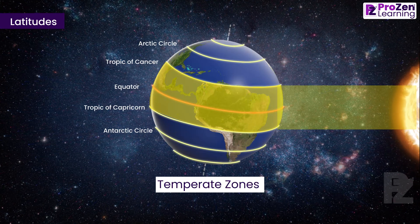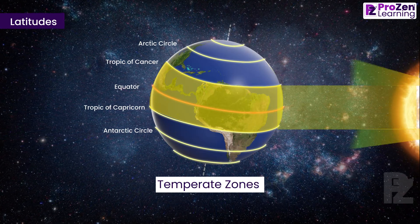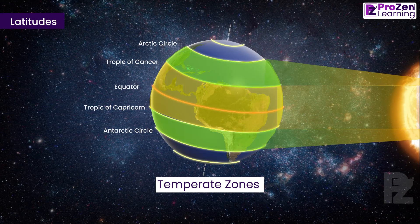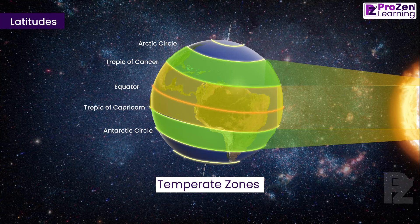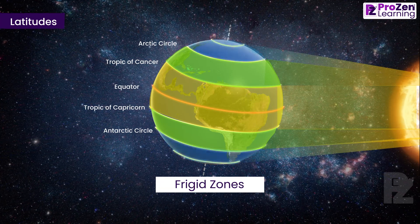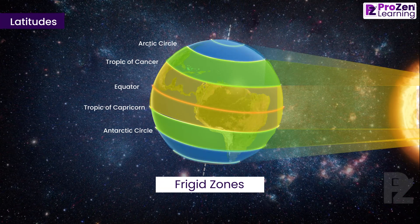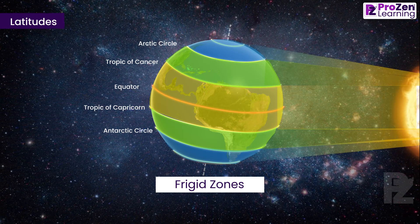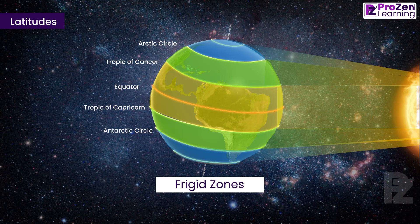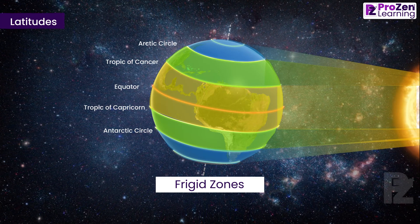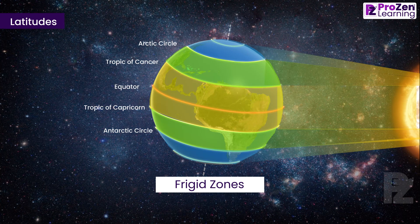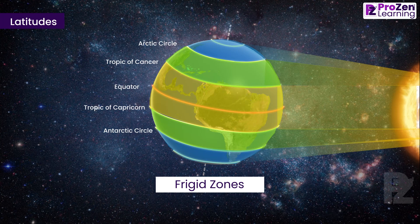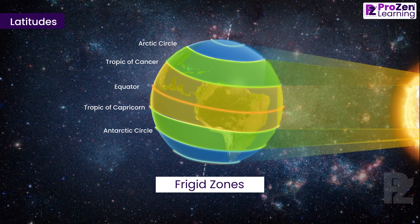Beyond the Tropic of Cancer and the Tropic of Capricorn, we have the Temperate Zones. The midday sun never shines directly overhead here, and the angle of the sun's rays decreases as we move towards the poles, so these zones experience moderate temperatures. The Frigid Zones lie between the Arctic Circle and the North Pole in the Northern Hemisphere, and between the Antarctic Circle and the South Pole in the Southern Hemisphere.